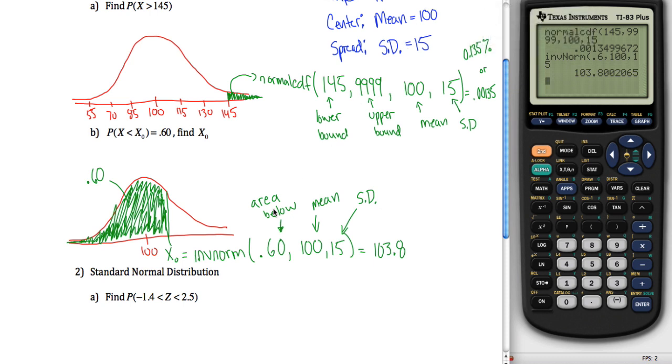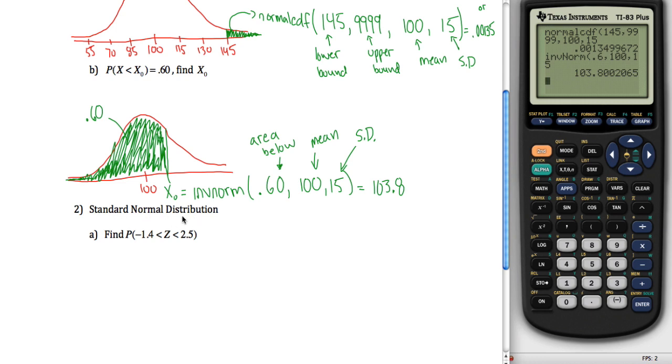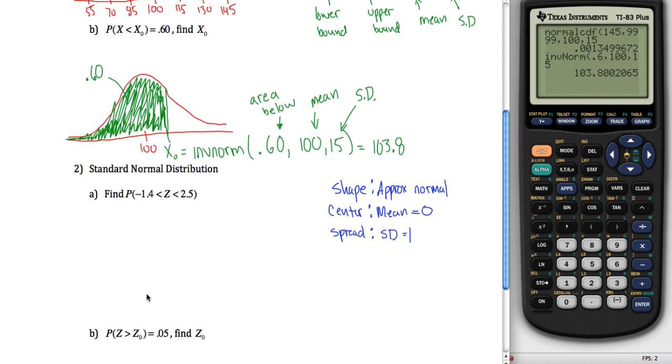These next two questions have to do with the standard normal distribution. We're not told anything about the shape, center, and spread, but just by giving this question and using the letter Z here, in our class we will assume that the shape is approximately normal, the center, given by the mean, is equal to 0, and the spread, given by the standard deviation, is equal to 1. Just because there's a Z, we're supposed to assume all this stuff.